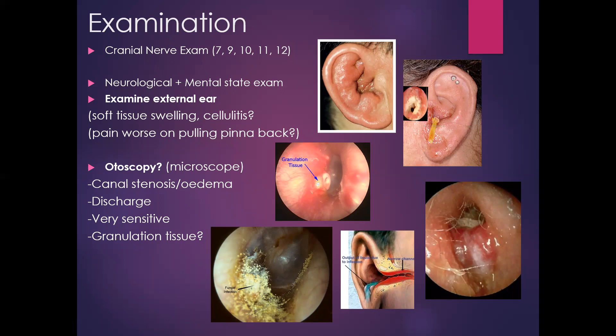Start by looking at the ear externally — is there any soft tissue swelling pre-auricular or post-auricular, or any developing cellulitis of the ear, as shown in the top left picture. Then touch the ear — is it exquisitely painful when pulling on the pinna or pressing on the tragus? However, you can also get these signs in acute otitis externa.